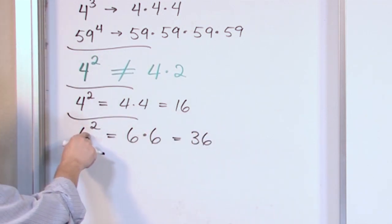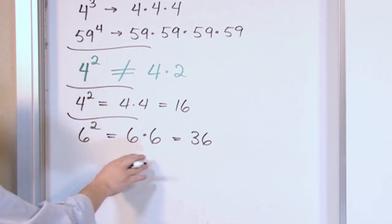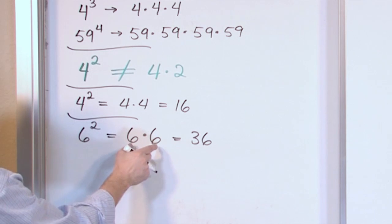You can see right away that six times two, if you just did that, would be 12. That's nothing even close to 36. So just forget about multiplying these. You have to multiply by itself.